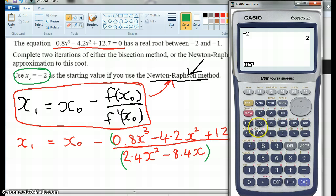Okay, so we go shift answer minus bracket, 0.8x³ - 4.2x² + 12.7. Oh, 12.7. Tell me if you see anything wrong on the screen. I'm wrong on the screen. Divide bracket 2.4,